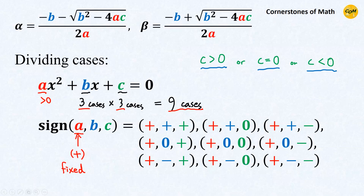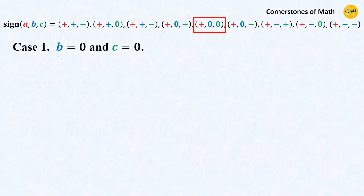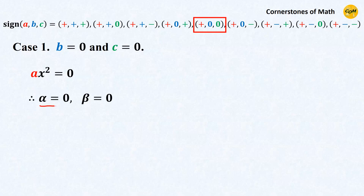With a being fixed to positive, the simplest case is where the remaining two coefficients b and c are both 0. In this case, the equation becomes ax squared equals 0. Therefore, two roots are always alpha equals 0 and beta equals 0, and therefore both limits of alpha and beta as a approaches 0 give 0.